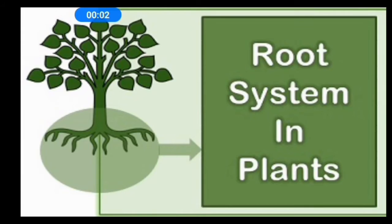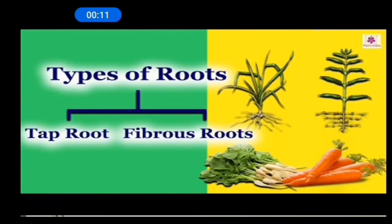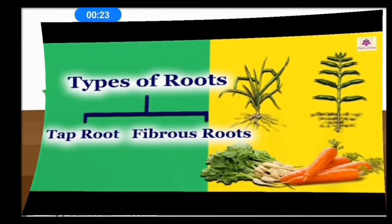Children, today I explained about the root system in plants. There are mainly two kinds of roots: one is tap root and another one is fibrous root.